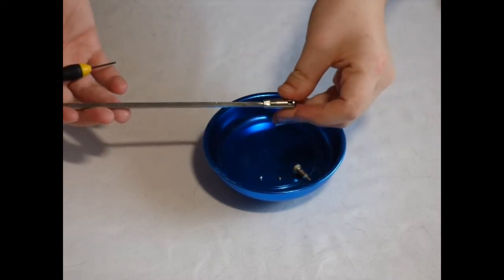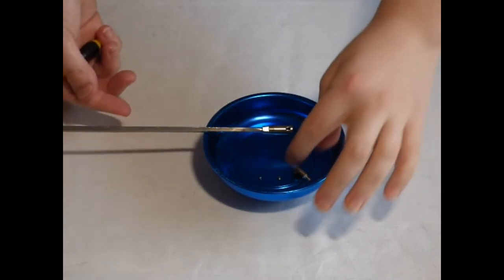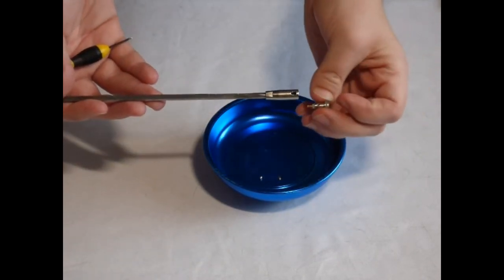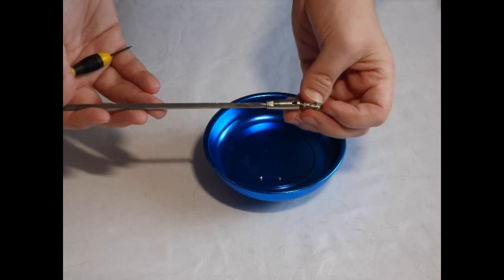To put the tip together, first put the spring in, and then using the same technique as before, put the button back in. Make sure that you line up the screw holes with the slots in the side.